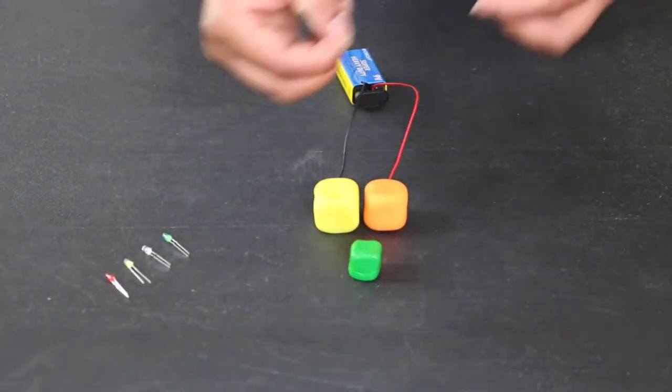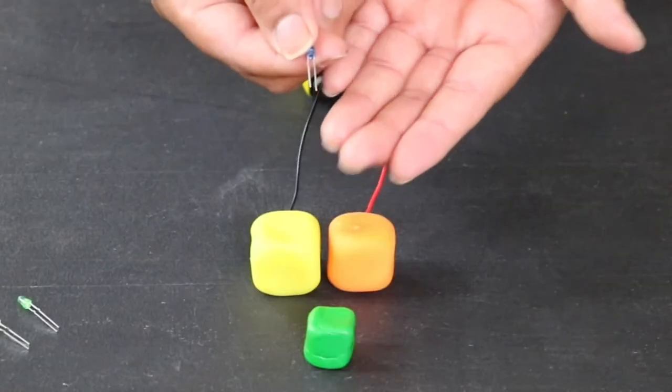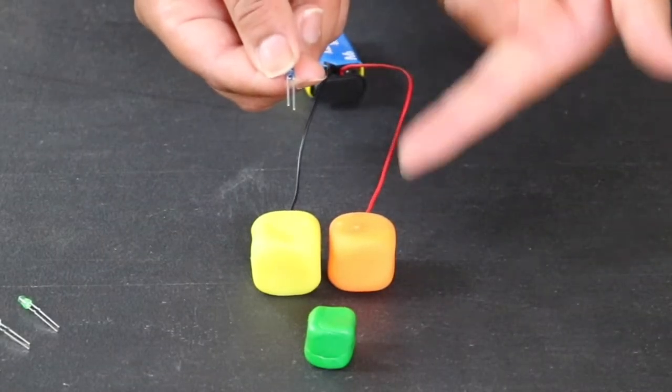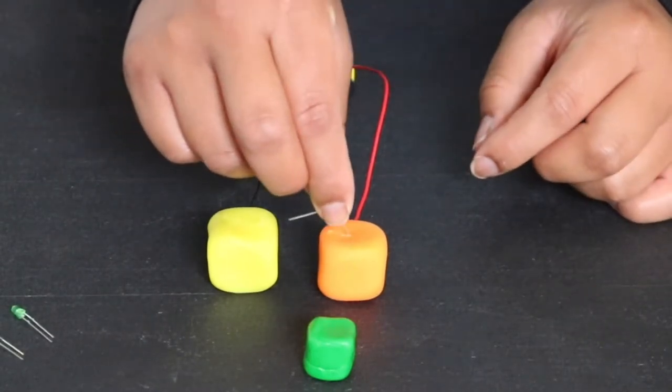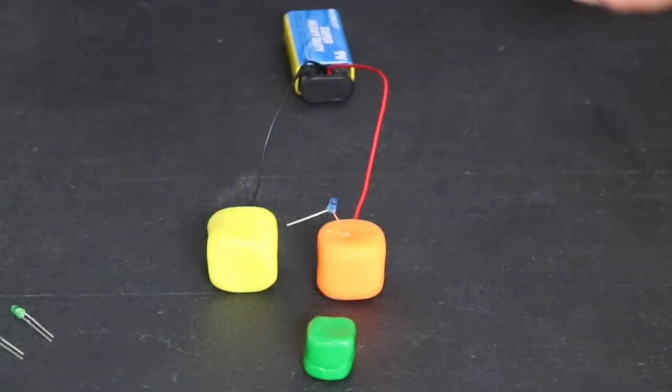Pick up an LED light and look at it closely. Notice how it has a long leg? The long leg will be going into the orange play-doh, while the short leg will go into the yellow play-doh. For this, you will have to bend the legs slightly apart.